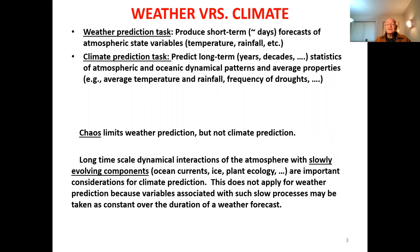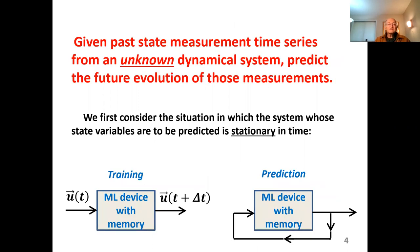Another very important distinction is that long timescale interactions of the atmosphere with slowly evolving components like the oceans, ice-covered regions, and plant ecology are important for climate prediction but not for weather prediction, because they're so slow that over the timescale of a typical weather forecast of about 10 days they're essentially constant — you use their initial value and say that's what it is for that short future.